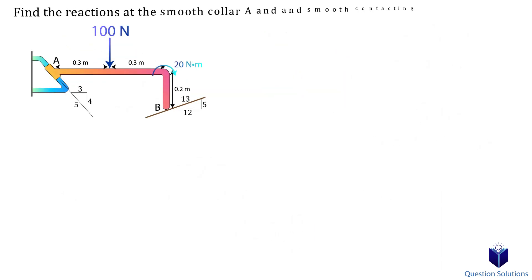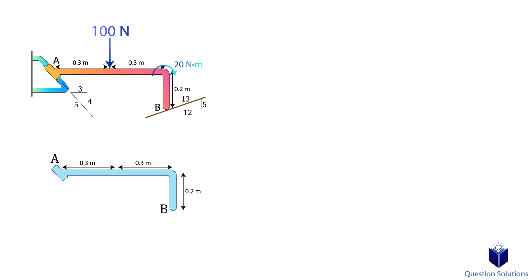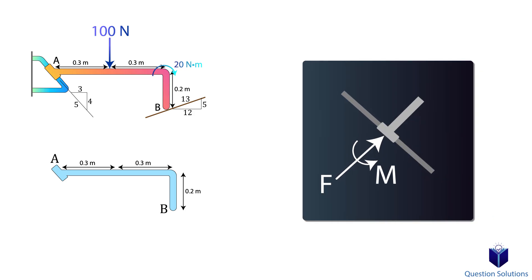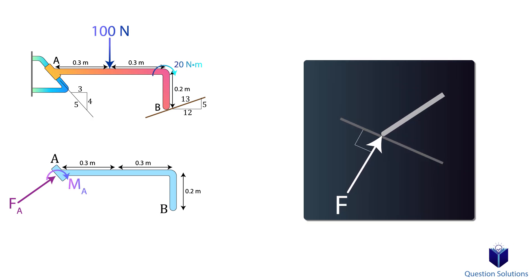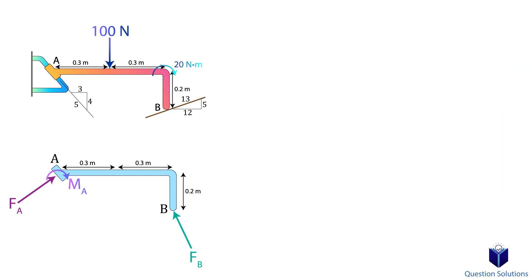In this question, we need to figure out the reactions at A and at B. Let's draw a free body diagram. At A, we see that it's a smooth collar, so it will have a force perpendicular to the rod, and there is also a moment created about A. At point B, which is a smooth contacting surface, we will have a reaction force that acts perpendicular to the surface. Since the forces are perpendicular, the given ratio triangles just flip. There is also a 100 N force straight down, and a moment of 20 Nm applied at the bend.